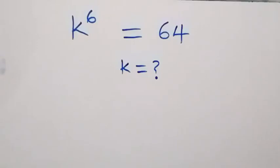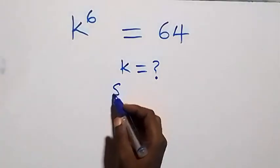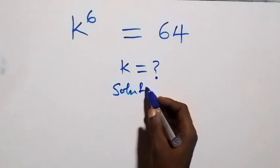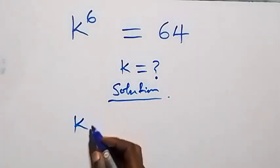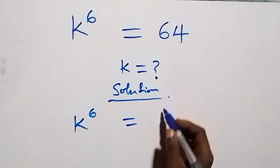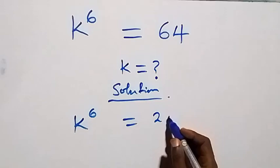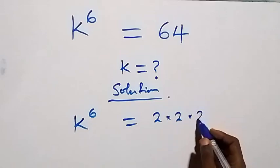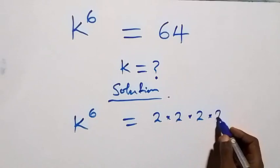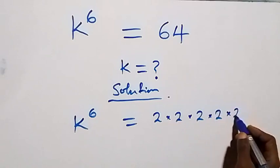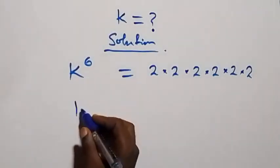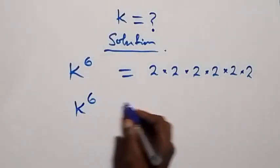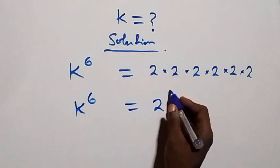Hello, you're welcome. How to solve this nice algebra problem. From what we have here, we can rewrite this as k raised to power 6 equals 64. 64 can be written as 2 times 2 times 2 times 2 times 2 times 2, that is 2 multiplied by itself 6 times, which implies k raised to power 6 equals 2 raised to power 6.